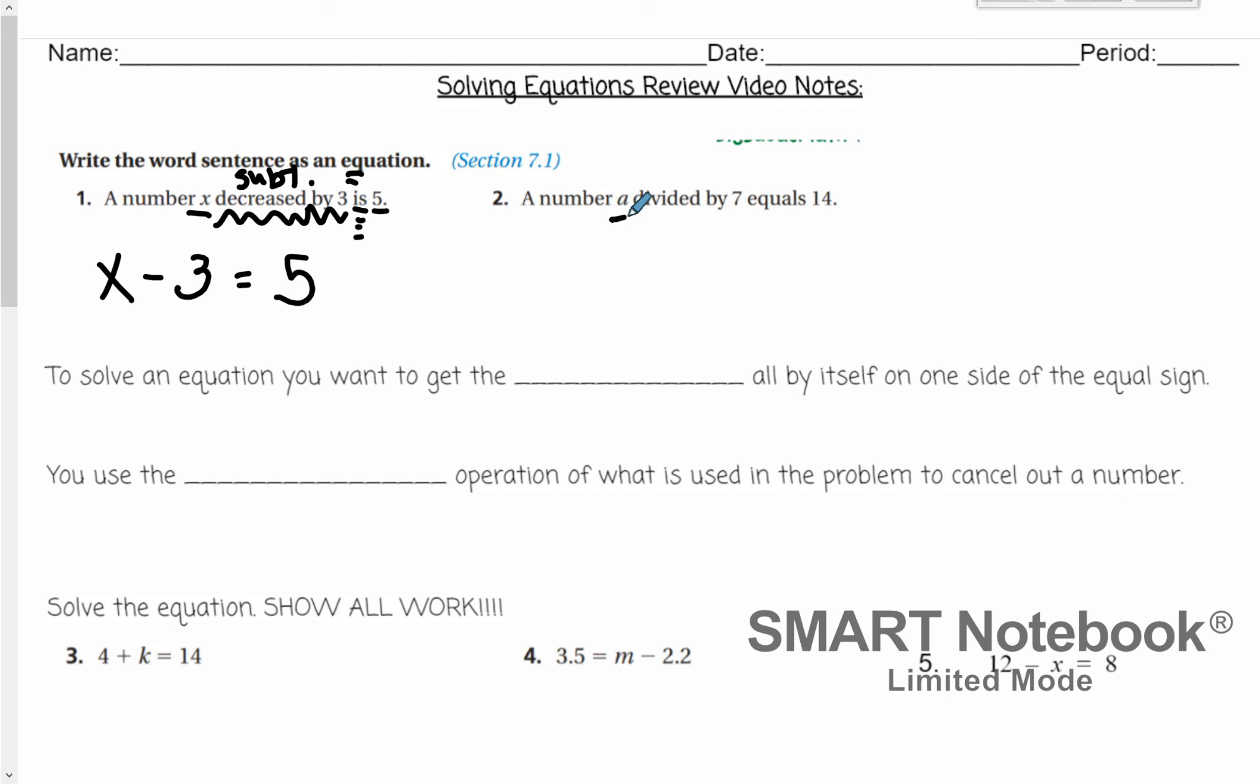A number a divided by 7 equals 14. So we have a divided by 7 equals 14. Remember, we don't have to use this division sign. We could always use a fraction bar too. a over 7 equals 14 because a fraction bar is the same thing as division. Either way that we would write this would be correct. Okay, so that was just a quick review on writing equations.